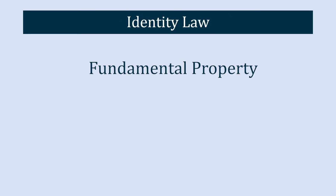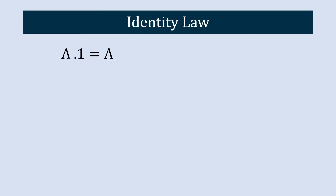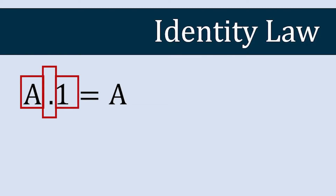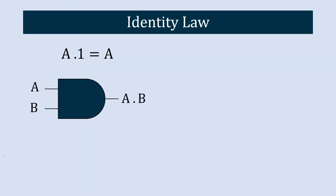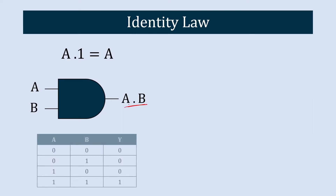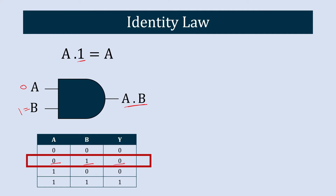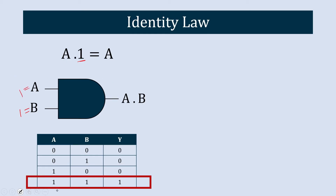The first law is the identity law. It is one of the fundamental properties that governs the simplification of Boolean expressions. It describes how combining a variable with an identity element in an operation leaves the variable unchanged. This law applies for both AND and OR operators. The first equation is A dot 1 equals A. This states that any variable ANDed with 1 will result in the variable itself. Using the AND gate truth table with B equal to 1: when A is 0, the output is 0, and when A is 1, the output is 1 — giving us A in all cases.